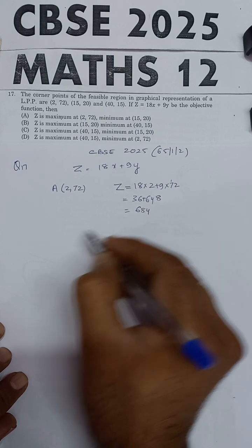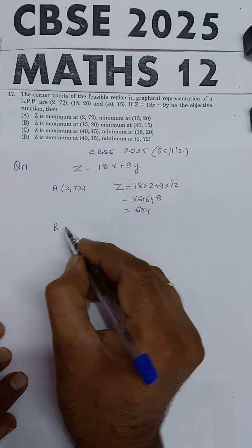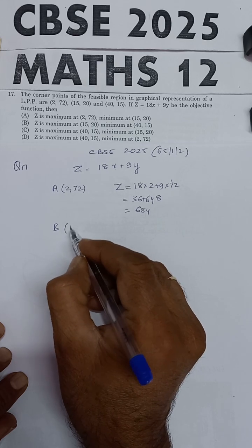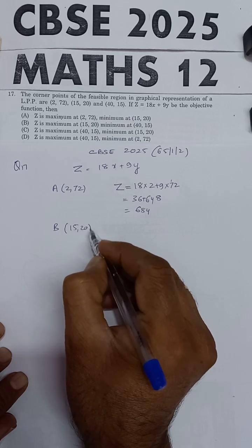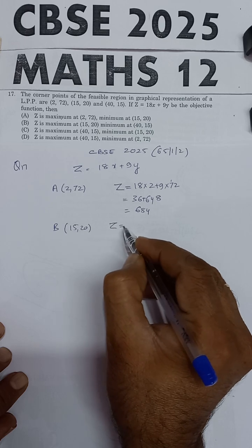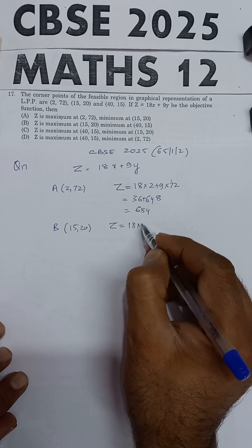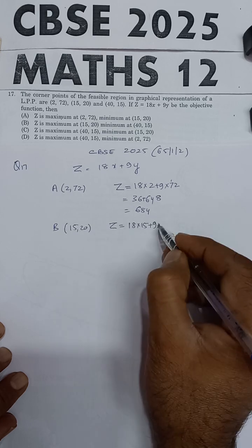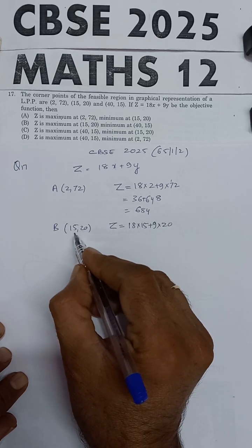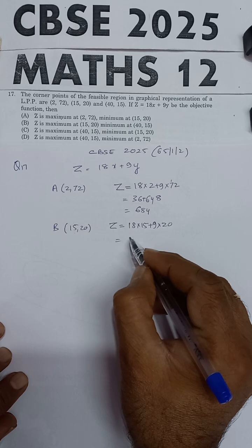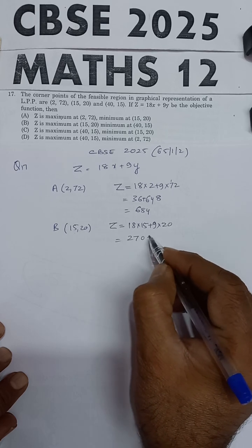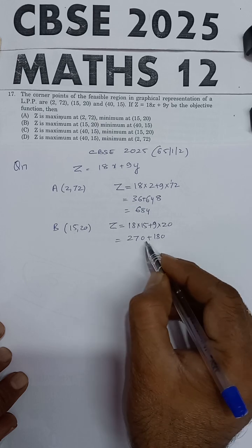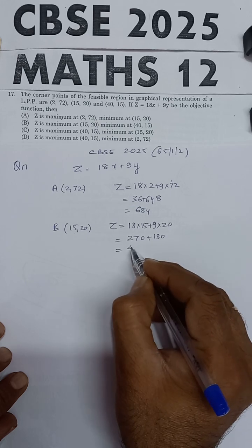Now taking the second point B (15,20). At this point, the value of the objective function z is 18 times 15 plus 9 times 20. 18 times 15 is 270 and 9 times 20 is 180. So 270 plus 180 equals 450.